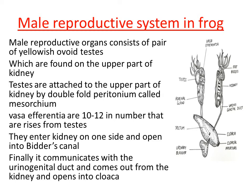The urinogenital duct finally opens into a chamber called cloaca. Cloaca is the common chamber connected with the urinogenital duct. Cloaca consists of a small aperture — an opening called the cloaca aperture. The function of the cloaca aperture is that through this opening, solid undigested waste, urine, and sperm are all excreted out from the body.